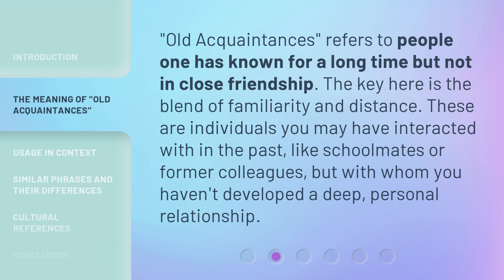Old Acquaintances refers to people one has known for a long time but not in close friendship. The key here is the blend of familiarity and distance. These are individuals you may have interacted with in the past, like schoolmates or former colleagues, but with whom you haven't developed a deep, personal relationship.